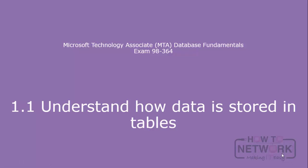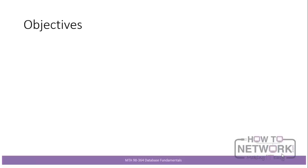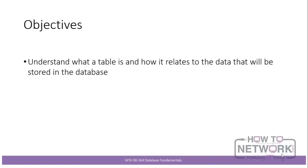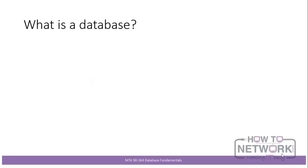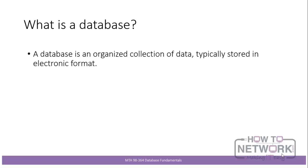Hello and welcome to MTA 98-364. The first section is 1.1: Understand how data is stored in tables. The objectives are to understand what a table is and how it relates to data stored in a database, to understand columns and fields, and to understand rows and records. First we need to look at some general concepts. The first question is: what is a database? A database is an organized collection of data typically stored in electronic format.